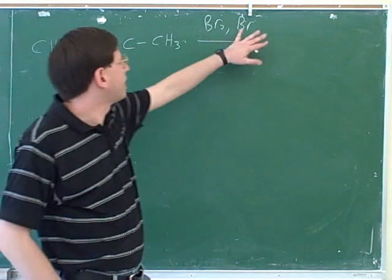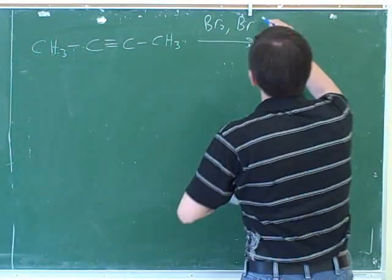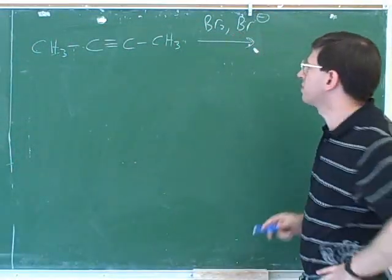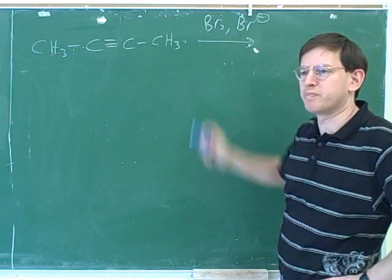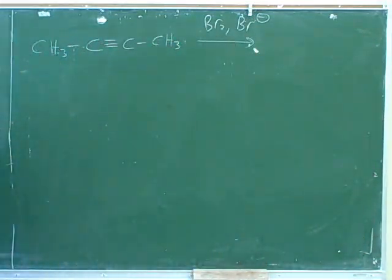If you kind of ignore the bromide anion here, we can pretty much predict what's going to happen here again by analogy with the alkenes. Let's focus on what we would expect to happen with the Br2. Let's just talk this through in words. What do you guys expect to happen here in words?